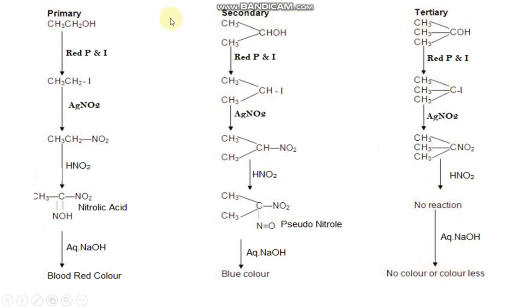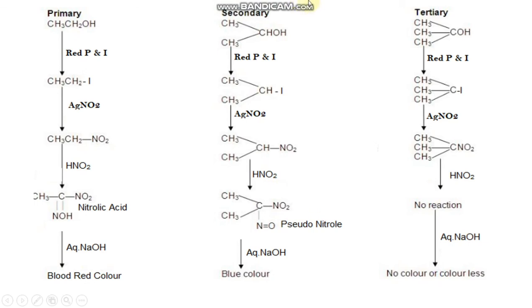This test is also used for distinguishing primary, secondary and tertiary alcohols. If we get a red colour, then we can understand that the original alcohol is primary. If we get a blue colour, then the original alcohol is secondary. If the final solution is colourless, then the original alcohol is tertiary.